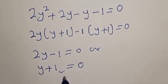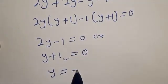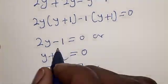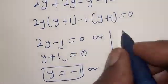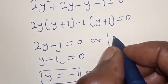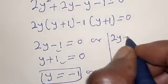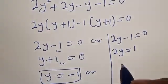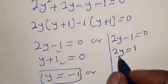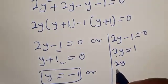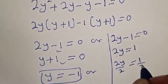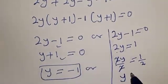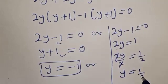From y plus 1 is equal to 0, y is equal to minus 1. From 2y minus 1 is equal to 0, we get 2y is equal to 1. Dividing both sides by 2, y is equal to 1 over 2.